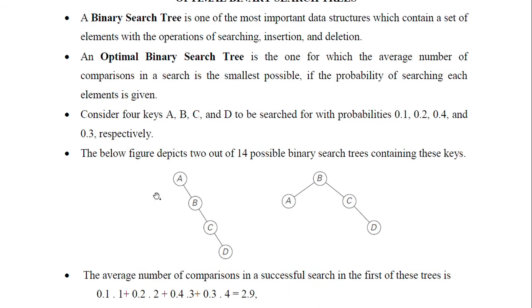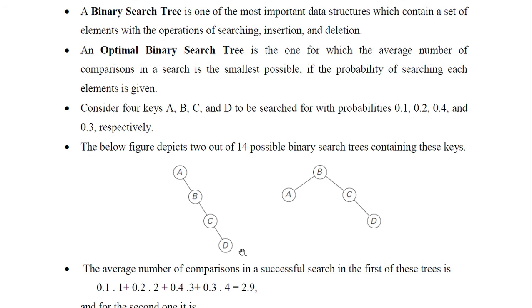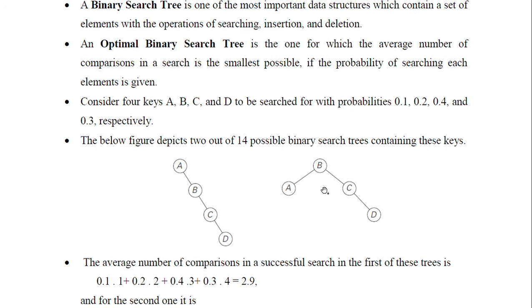If you take the number of comparisons needed for the successful search of A, B, C and D in the first tree, that will be 2.9. The probability of occurrence of A is 0.1 into 1 comparison. For B, 2 comparisons are needed. For C, 3 comparisons are needed — first compare with A, since C is greater move right, compare with B, since C is greater move right, then match. The average number of comparisons for this tree equals 2.9.